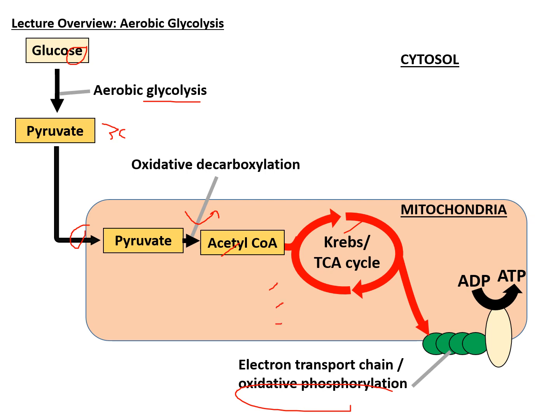Acetyl coenzyme A then enters the Krebs cycle to form NADH, FADH2, and GTP. One GTP is equivalent to one ATP because of the direct transfer of a phosphate group from GTP to ADP forming ATP — this process is known as substrate level phosphorylation. Both FADH2 and NADH can then be used in the electron transport chain for the production of many more ATPs.